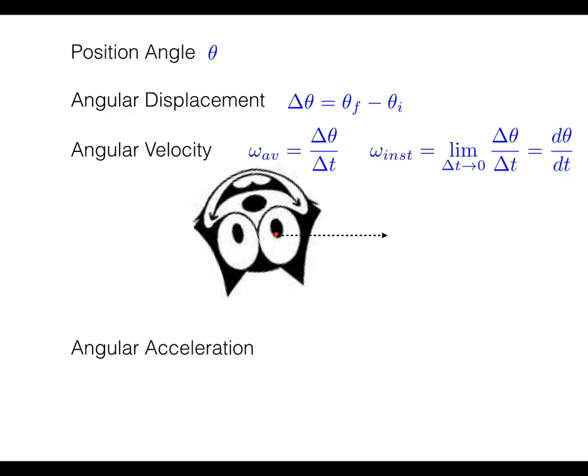Angular acceleration can similarly be defined. So the letter we use for angular acceleration is alpha. So the average angular acceleration is going to be delta omega over delta t. And if you want the instantaneous angular acceleration, that's the limit as delta t approaches zero of delta omega over delta t. Or you can write it as a derivative, d omega by dt.